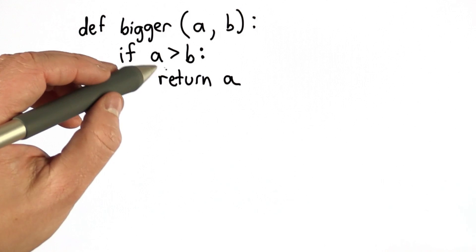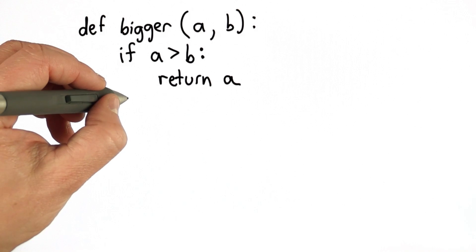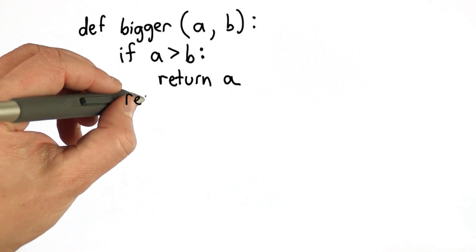If that's not the case, well, if it was the case, we returned A. If it's not the case, then we're going to get here, and we can return B.